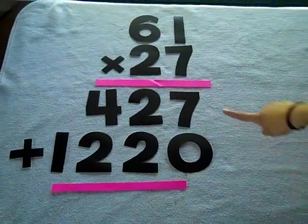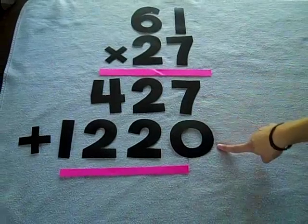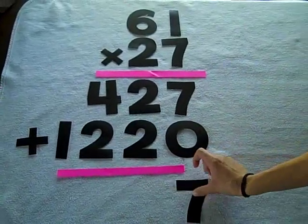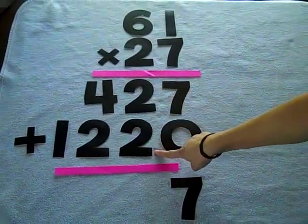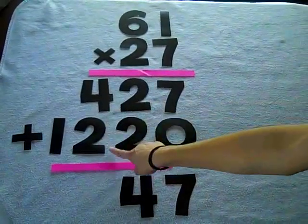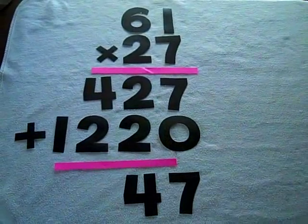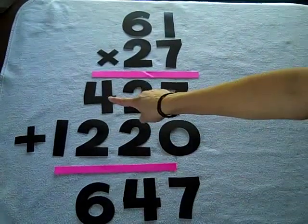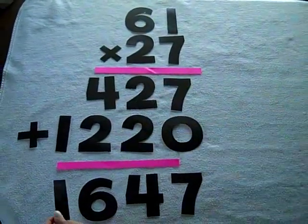So now we add. 7 plus 0 is 7. 2 plus 2 is 4. 4 plus 2 is 6. And 0 plus 1 is 1.